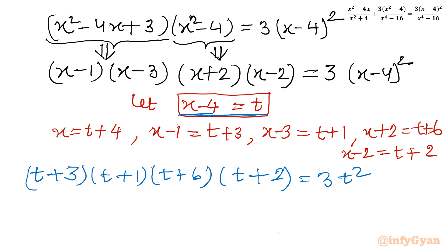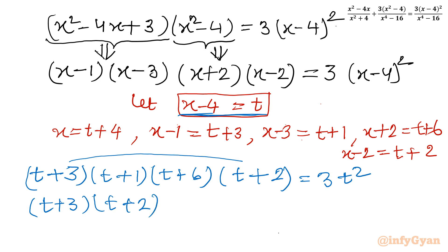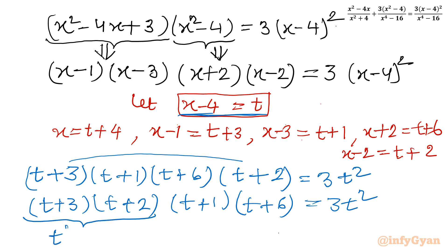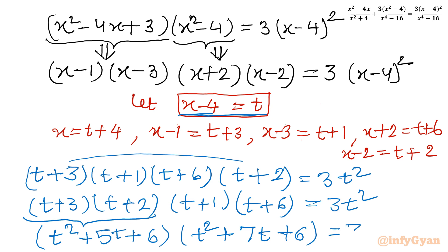Now I will club the brackets together. First and last: (t + 3)(t + 2) = t² + 5t + 6. Then (t + 1)(t + 6) = t² + 7t + 6. The right hand side is 3t². Now multiplying these out: the first bracket gives t² + 5t + 6 and the second gives t² + 7t + 6, equal to 3t².